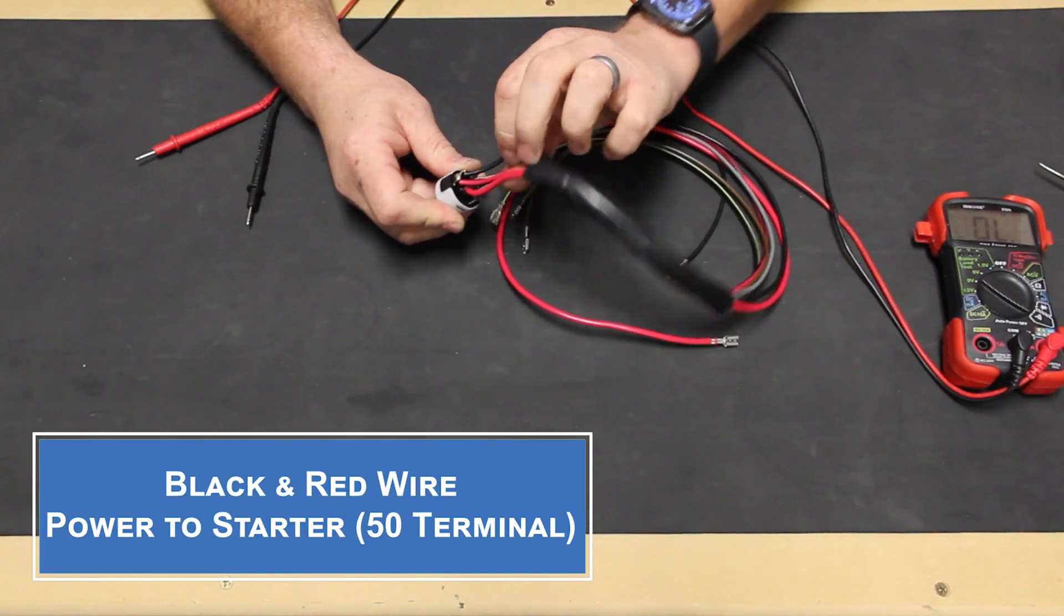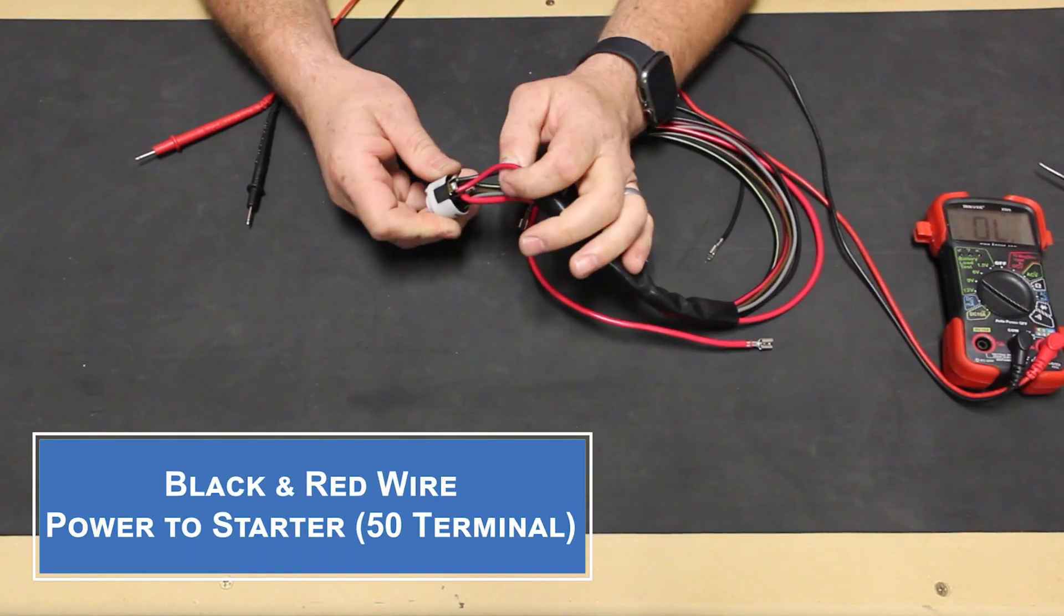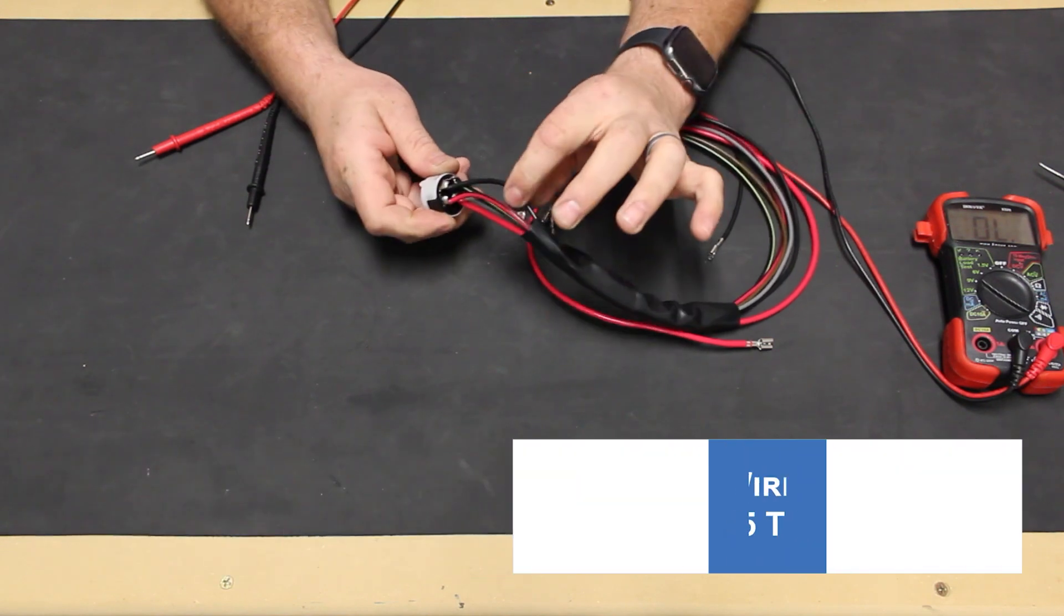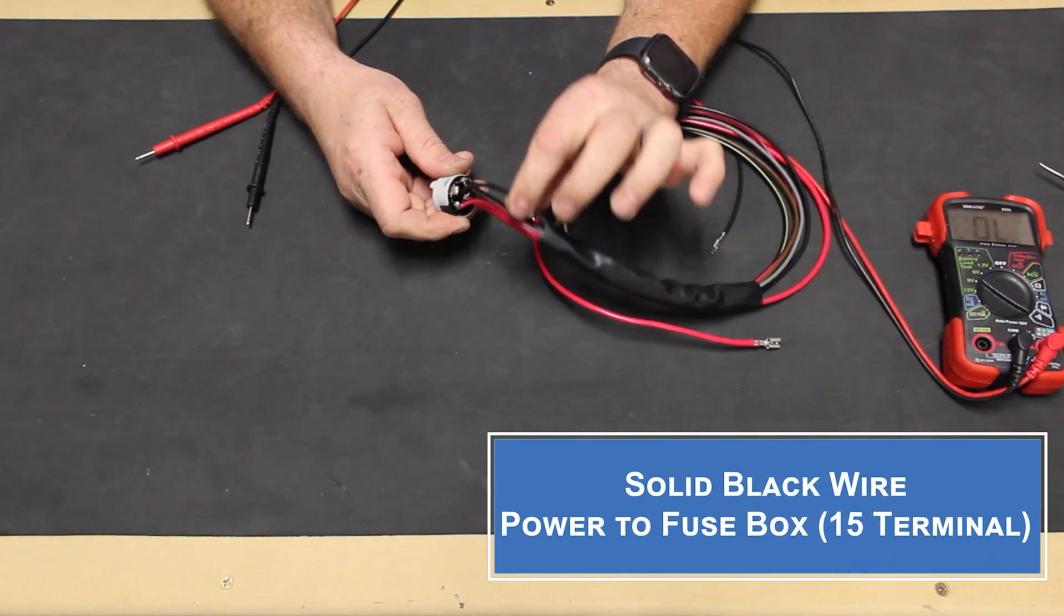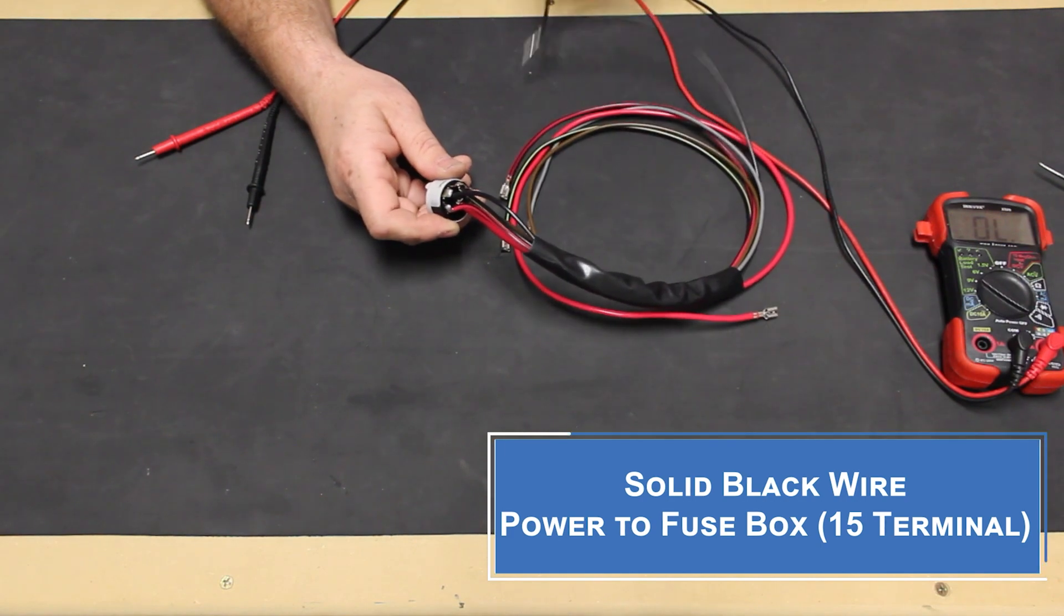They'll also have a 50 terminal, which on our switch is a black and red wire, and they'll have a 15 or 54 terminal, which is the black wire in our switch.